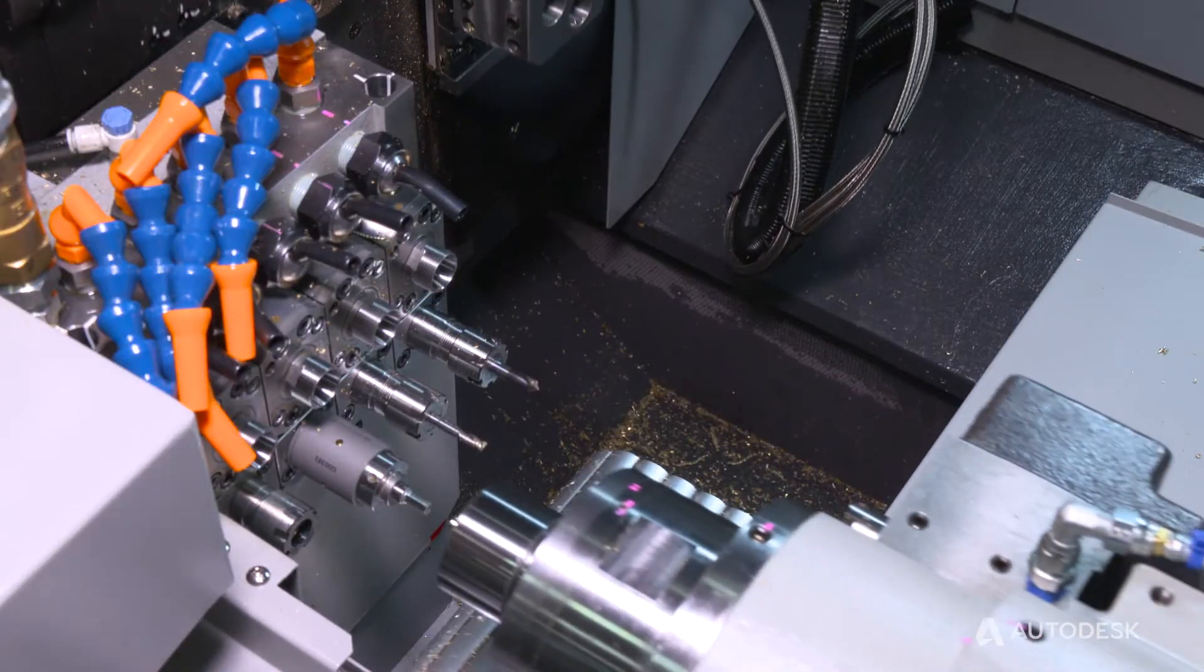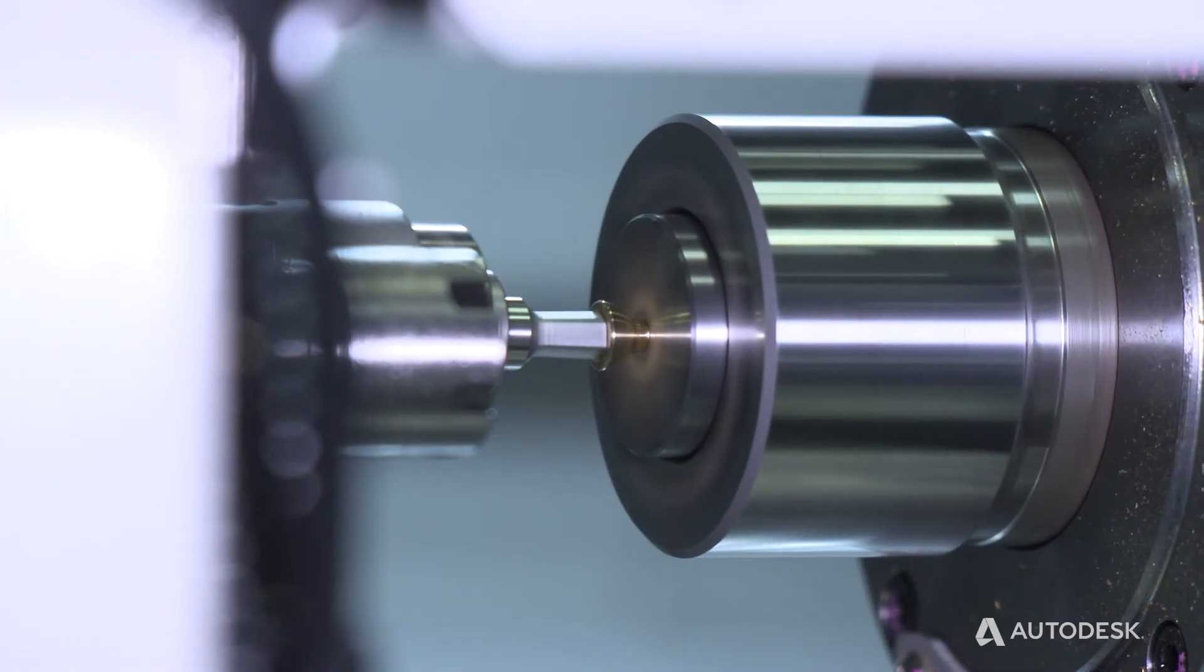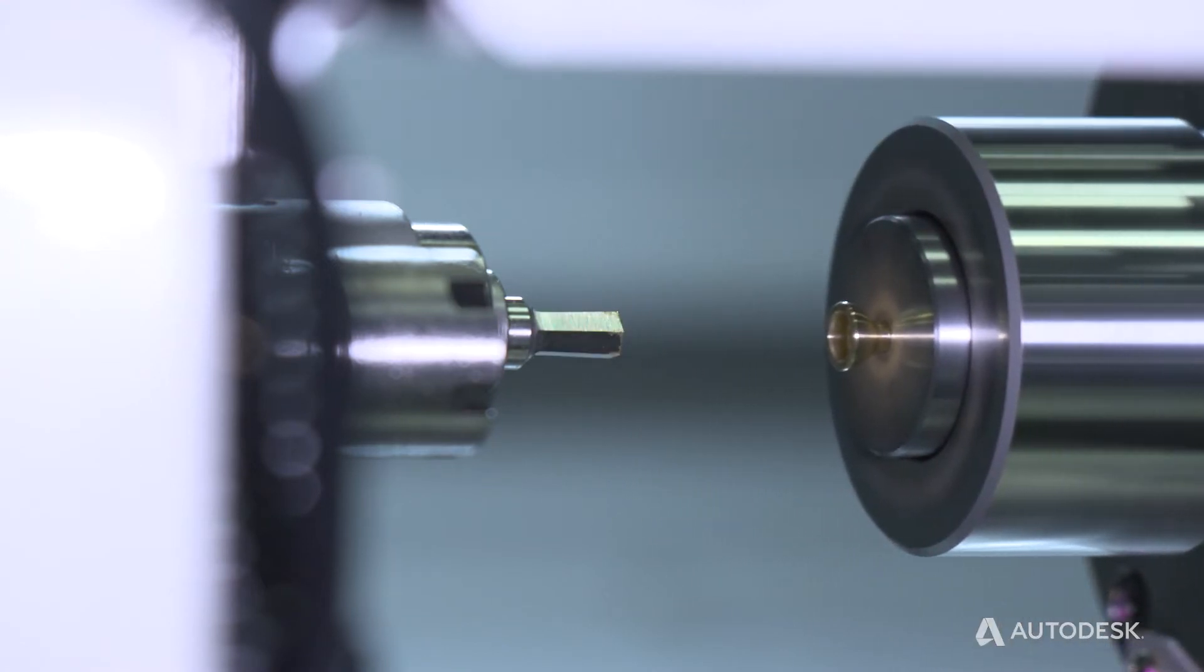Today we're going to talk about the final process in making this screw: broaching. When you have to manufacture a screw, on the back of the head you need a place to put the wrench. In many cases you can't have radiuses in the corner of the hex or hexalobe, so you need to use another process. We can't mill it, we can't turn it, in this case we can broach it.